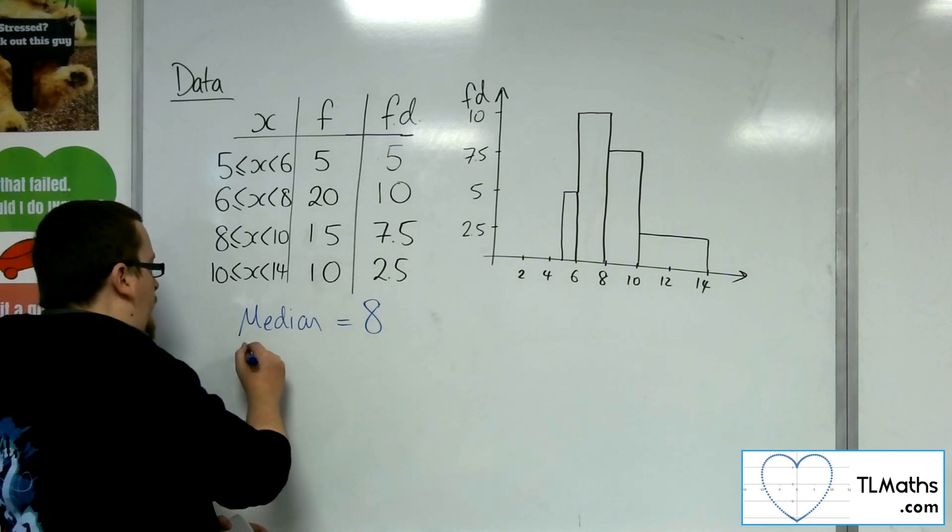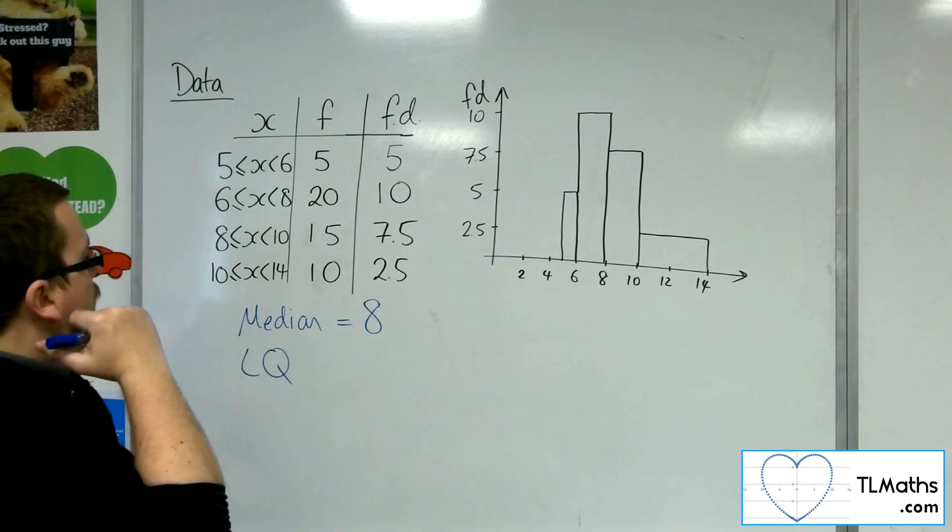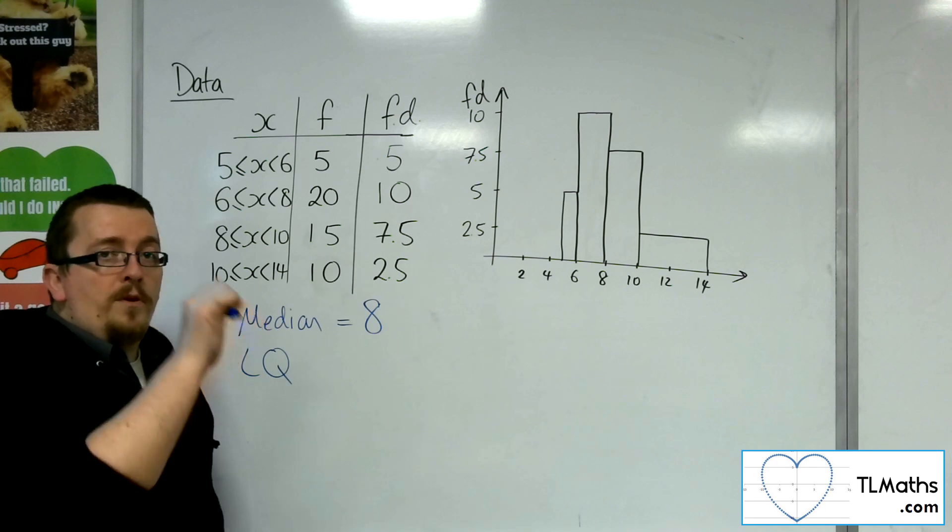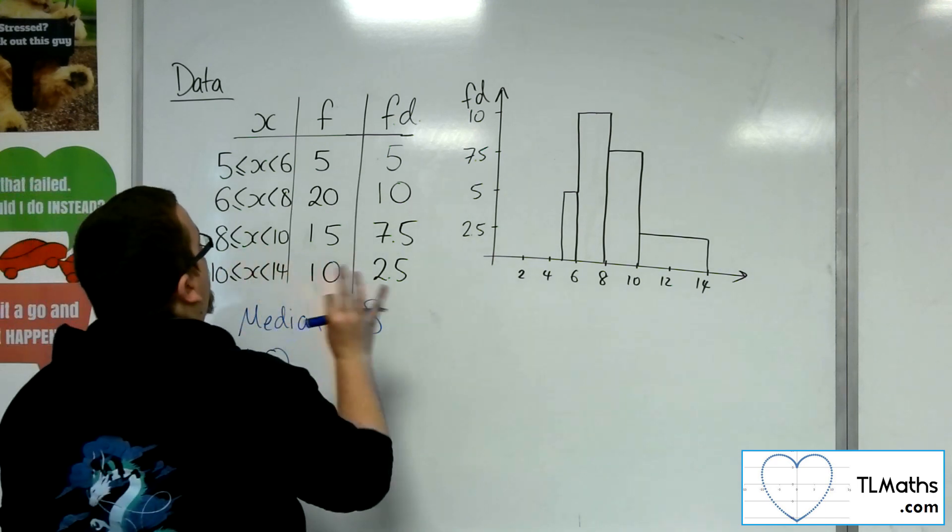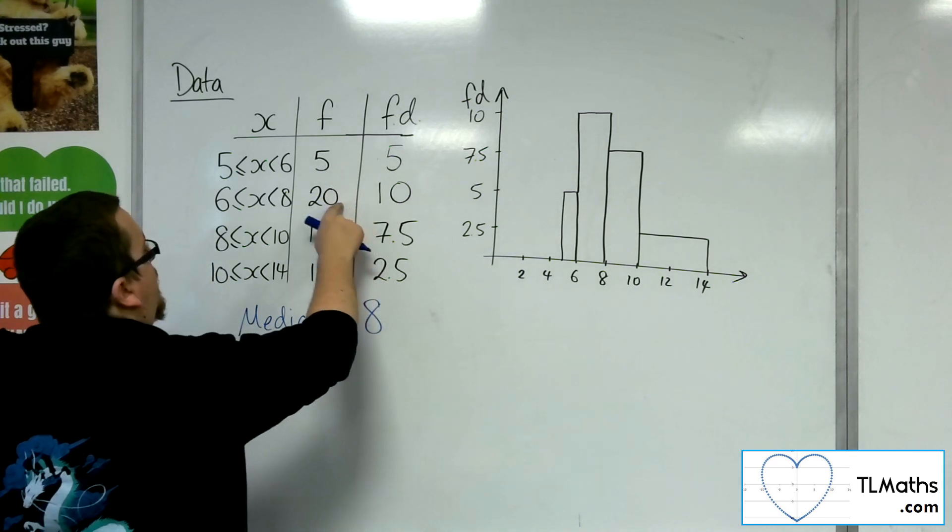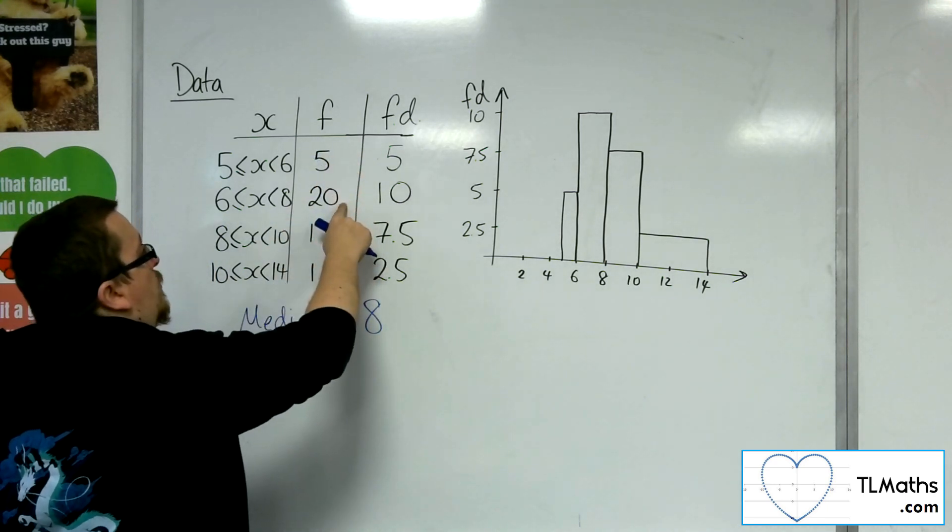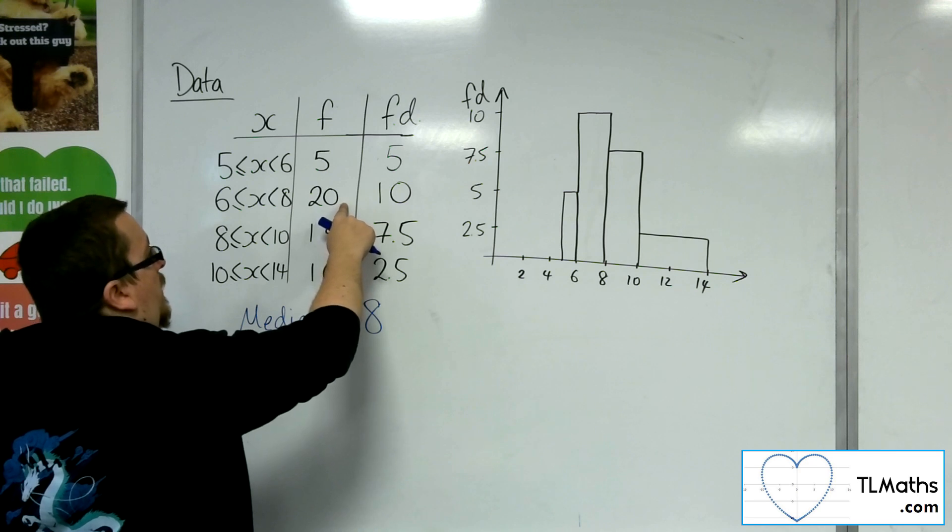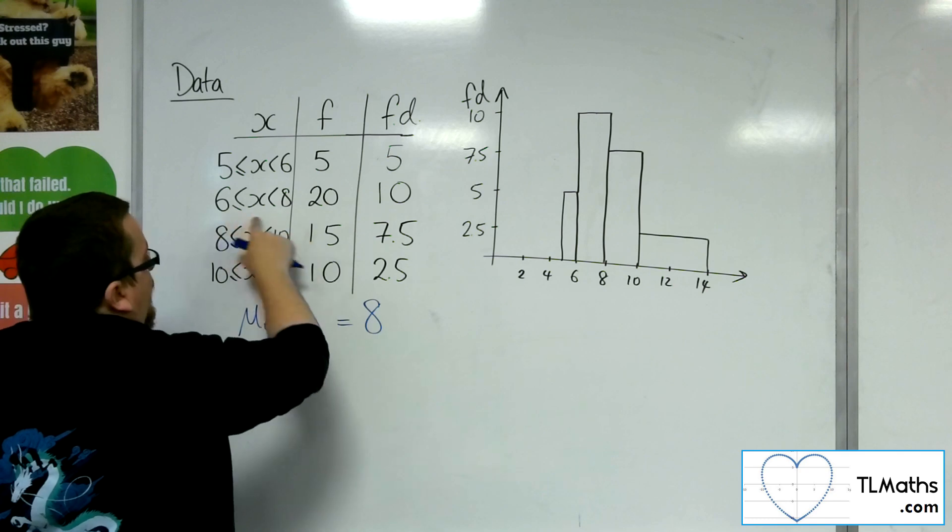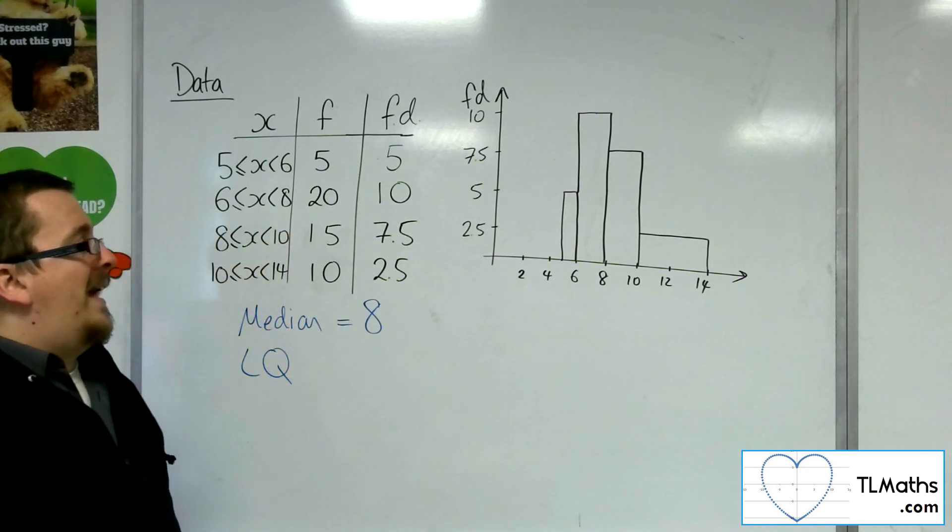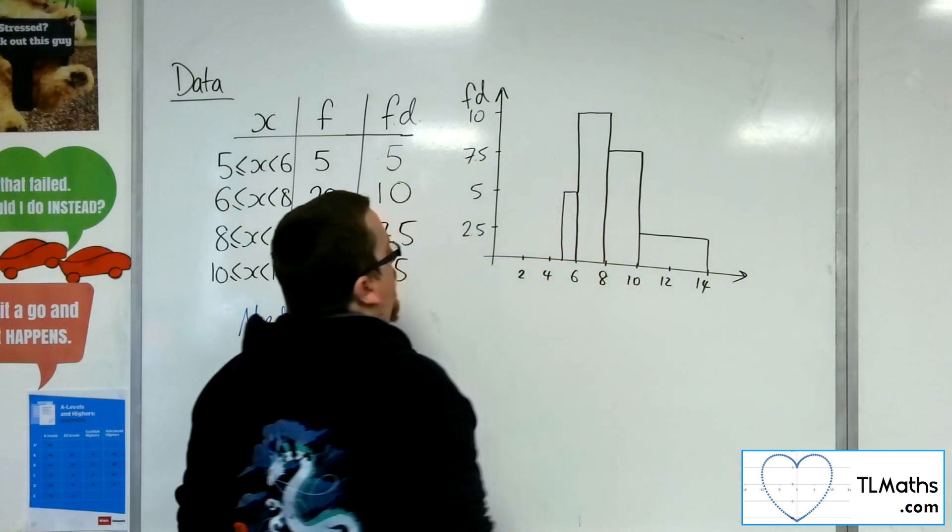Now, as for the lower quartile, now the lower quartile is going to be the 12.5th value along, 50 divided by 4. And now the 12.5th value is going to be somewhere between 6 and 8, because once we've gone through 5, we're going to get through 20 to get to the next grouping. So by that time, I've already gone past the 12.5th value. So the 12.5th value is going to be between 6 and 8. So it's going to be somewhere in this bar here.